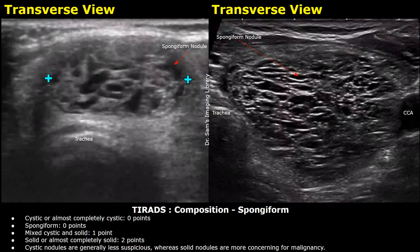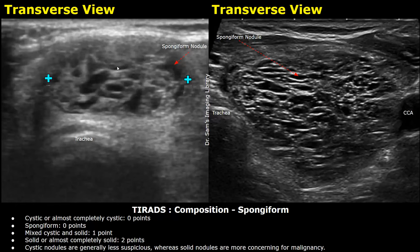The next appearance is spongiform. Spongiform nodules consist of multi-cystic areas inside the nodule, giving a sponge-like appearance with multiple anechoic spaces. Spongiform nodules also get zero points.